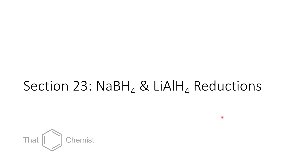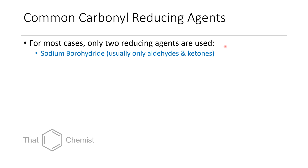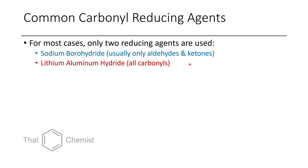Now let's get to today's material: sodium borohydride and lithium aluminum hydride reductions. We're predominantly going to be talking about carbonyl reduction reactions, but we're also going to talk about the reduction of alkyl halides in the case of lithium aluminum hydride. For most cases, those are the only two reducing agents you see used — sodium borohydride, typically only used for reducing aldehydes and ketones, and lithium aluminum hydride, which can reduce all carbonyls as well as several other functional groups.